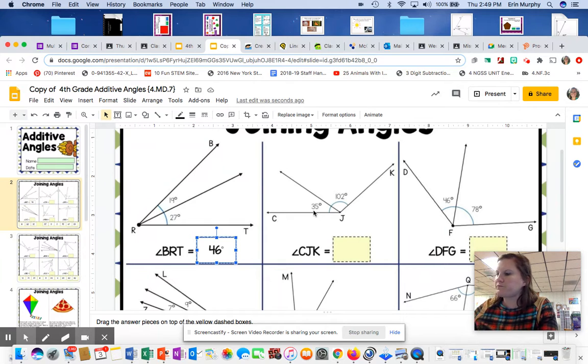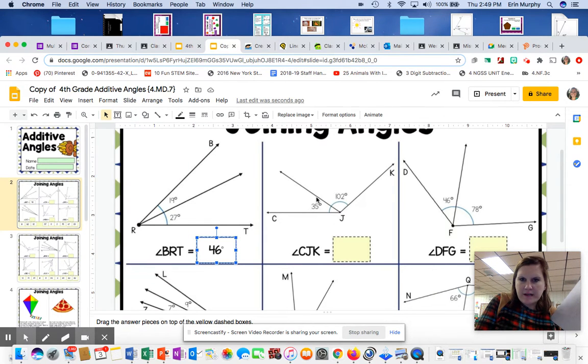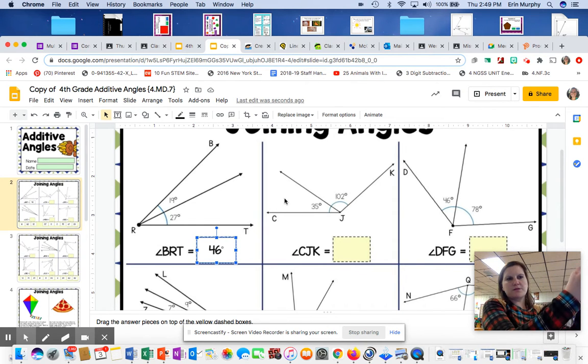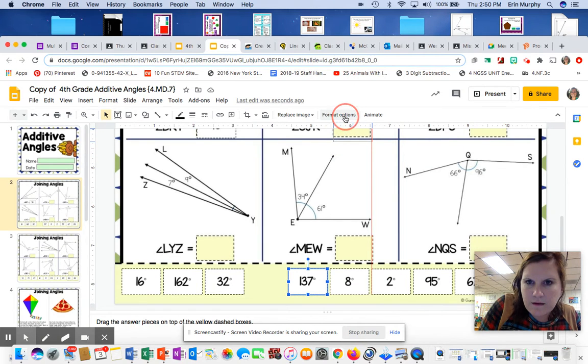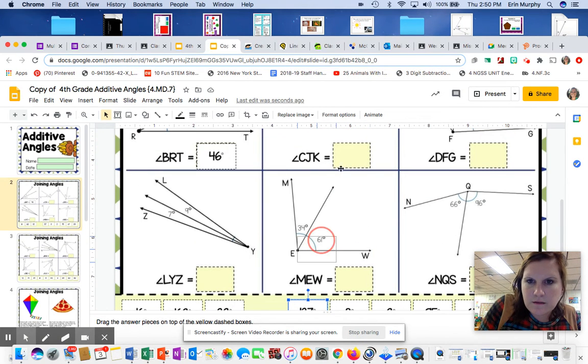Let's look at another one. We have 35 degrees and 102. So I see part 35. The other part's 102. So I want to know what C, J, K is. I want to know what the whole angle is. So once again, you need to bring the two parts. I can't open my marker. The two parts together. 35 plus 102. 5 plus 2 is a sum of 7. 7 will go in the 1's. 3 plus 0 is a sum of 3. 3 goes in the 10's. And you bring the 1's. So I would be, that would be 137. So I'm going to look for 137. Here it is. And you're going to drag it up here.